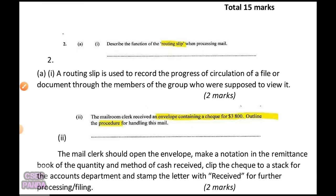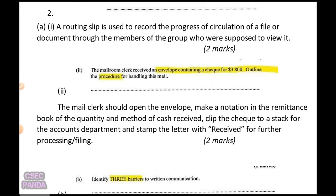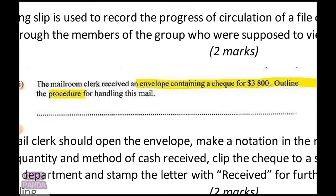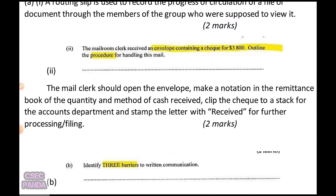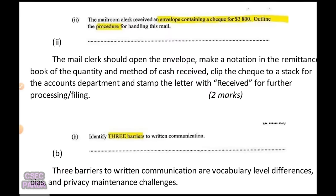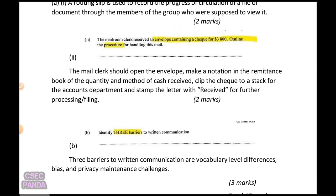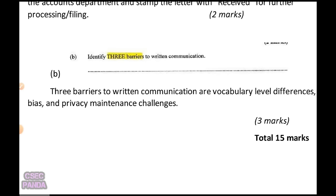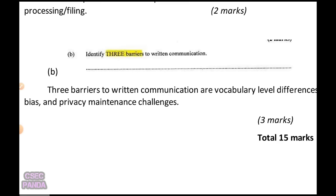The second part of question two asks: if the mail room clerk receives an envelope containing a check for $3,800, what procedure should they follow? The mail clerk should open the envelope, make a notation in the remittance book of the quantity and method of cash received — in this case, a check — clip the check to a stack for the accounts department, stamp the letter as received, and pass it on for further processing or filing.